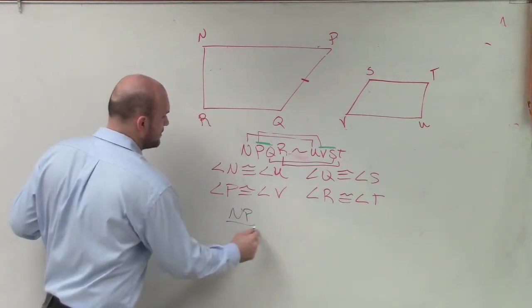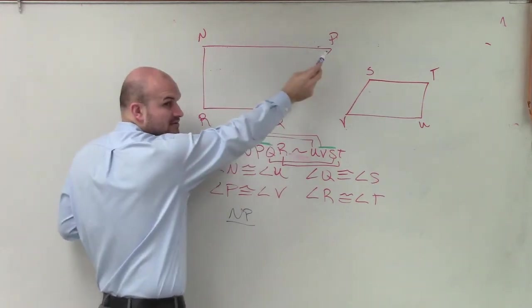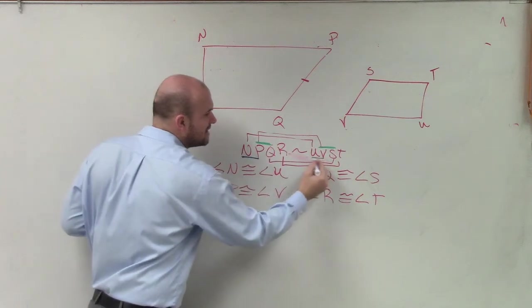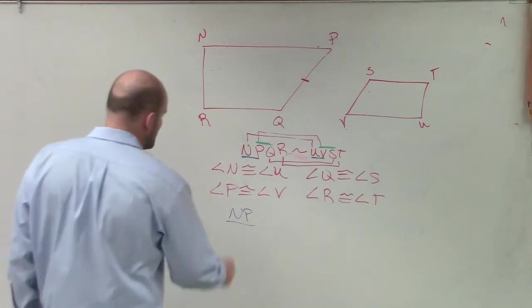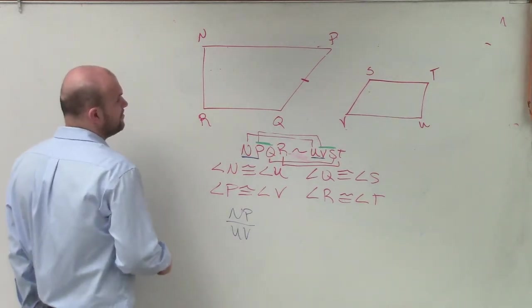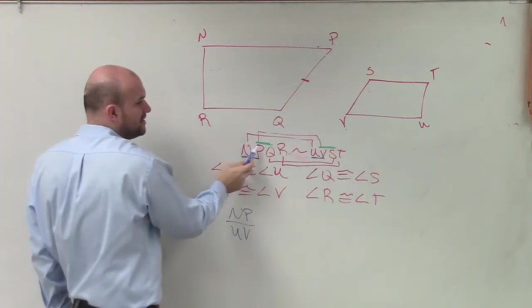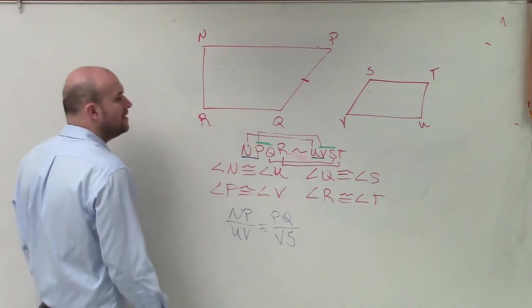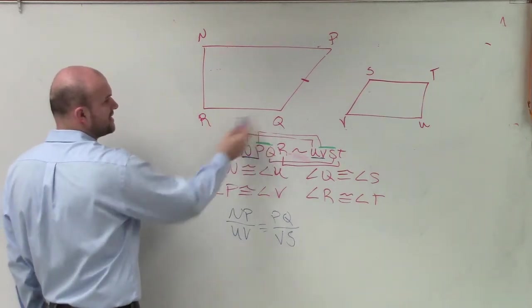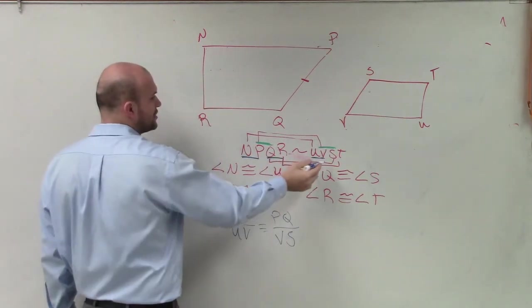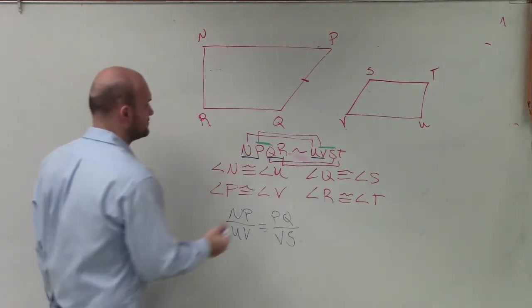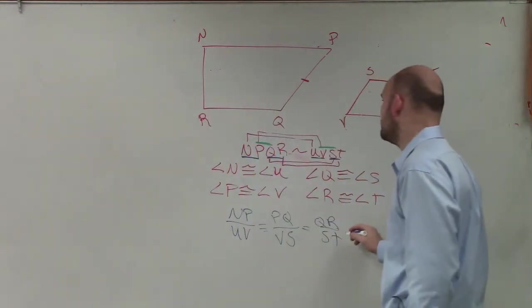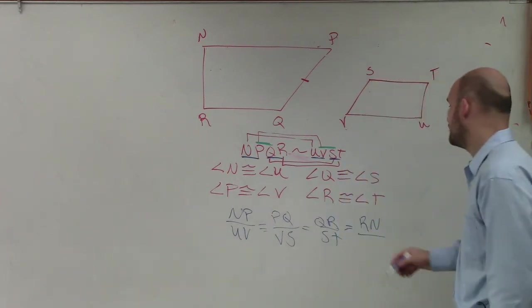So what we're going to do is I can now say with my ratios that NP, this is the longest side, right? Is that the longest side? What's the longest side over here? UV. So I could say NP is compared to UV. Does everybody see that? They're both the longest sides. So NP is compared to UV. PQ, PQ is the only one that's slanted, right? PQ is the same thing as VS, yes? Then we can go up to QR. QR looks like that's about one of the shorter lengths. QR should go to ST, and then the last one, I could do RN, and RN can go to TU.